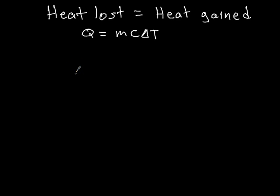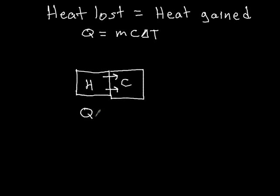The idea here is that if you have two objects that are in contact with each other, and one object is hot and the other object is cold, then heat is going to flow from the hot object to the cold object. And the amount of heat that the hot object loses is going to be equal to the amount of heat that the cold object gains.